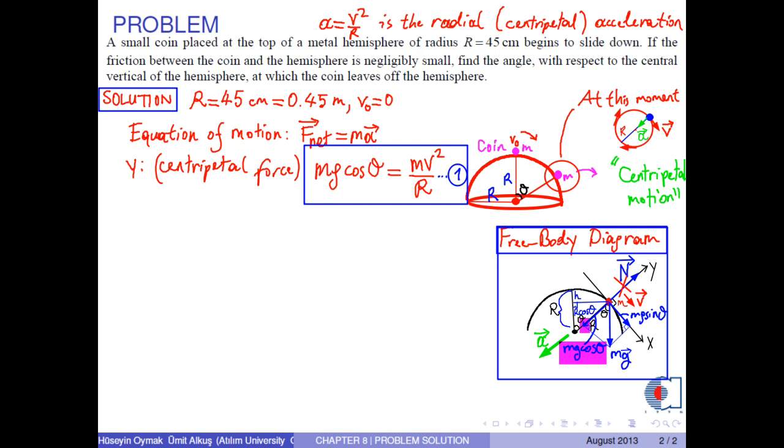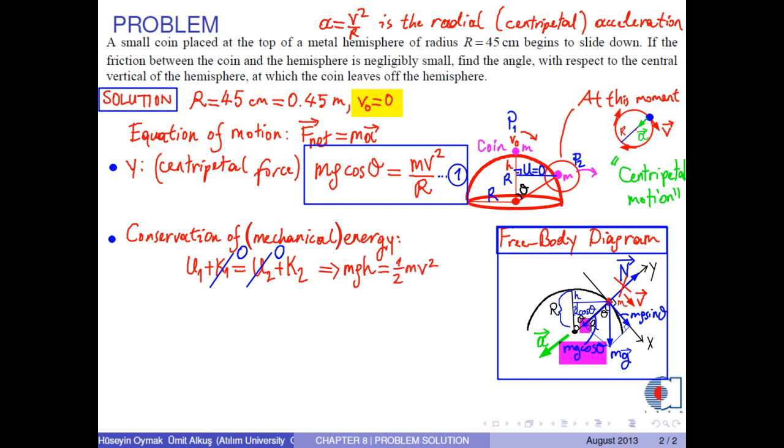Now, we write the conservation of total energy. The potential energy of the coin at point P1 becomes M times G times H, and the kinetic energy at this point is zero since it is initially at rest. The potential energy of the coin at point P2 is zero, and the kinetic energy is one half M times V squared.